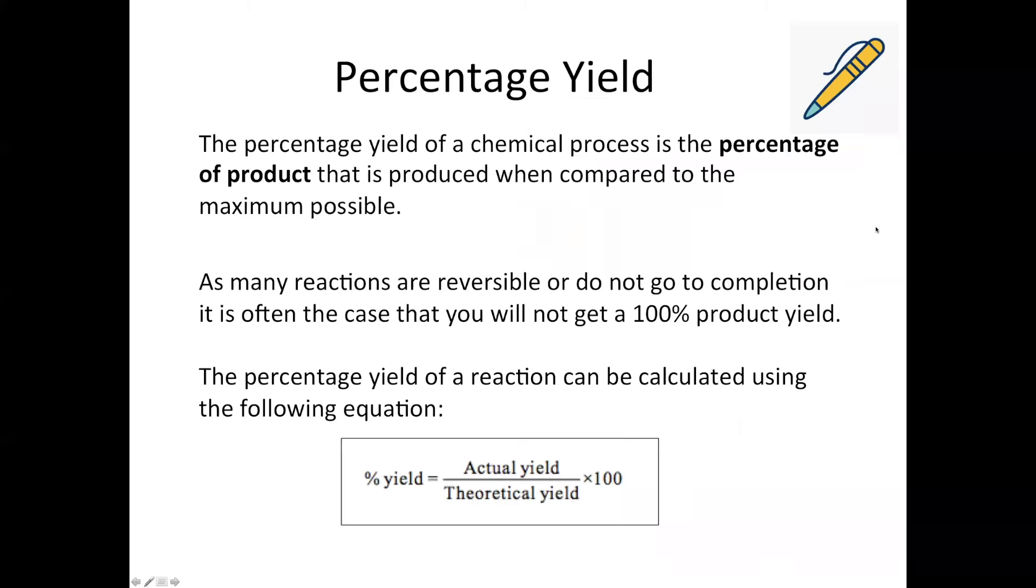So all the percentage yield is, this is specifically what it says, is the percentage of product that you get when you compare it to how much you could get in an ideal world if all of the reactants were converted into products.